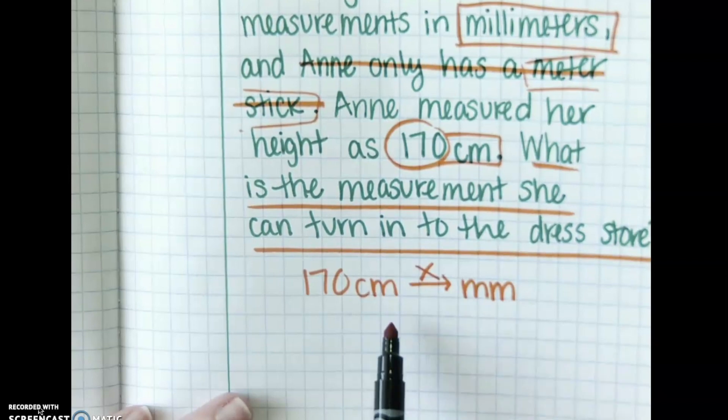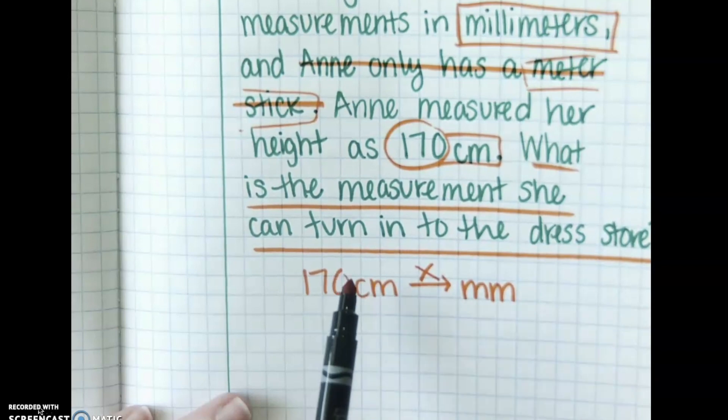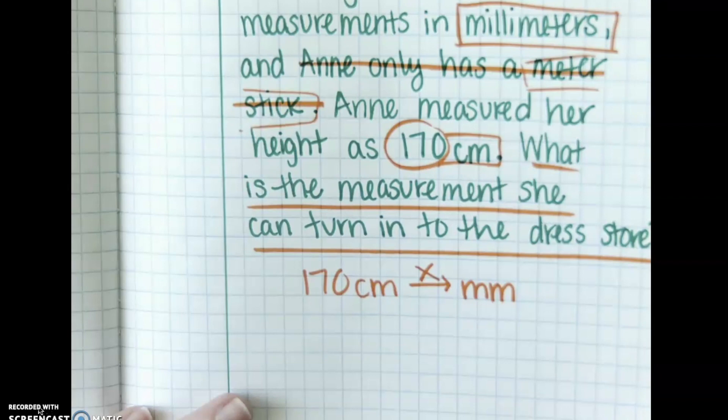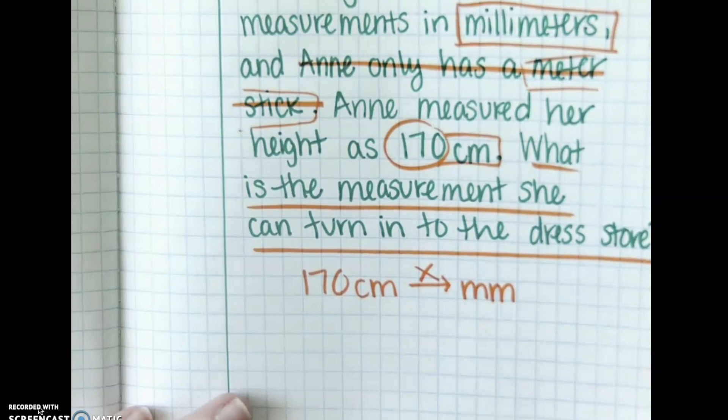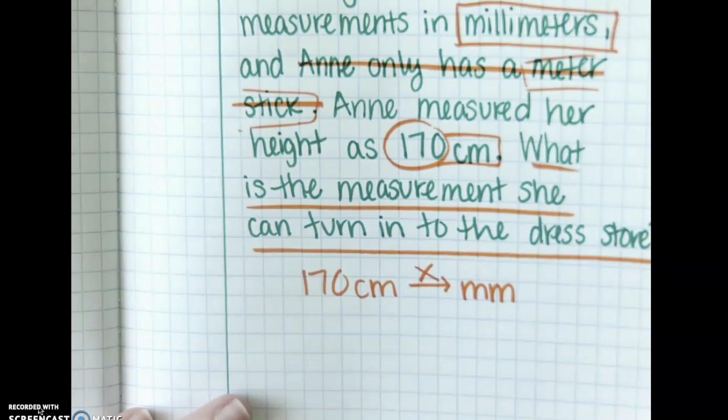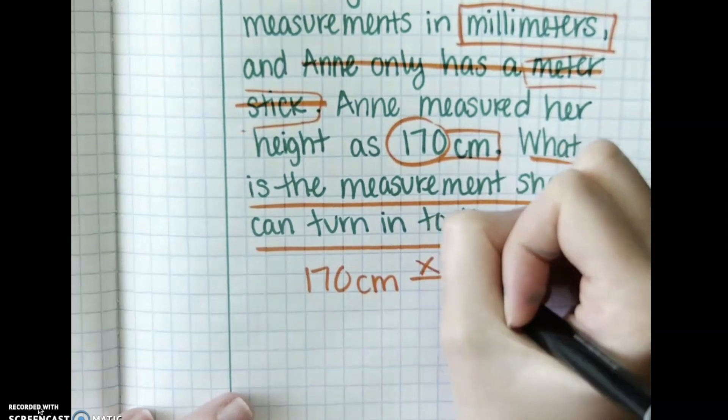All right, centimeters to millimeters. Well I have to think how many millimeters are in one centimeter. To figure that out I could reference my chart. In this case our prefixes might be a little confusing because we're not converting specifically to a meter. We're converting between prefixes. So in this case I would definitely look at the chart. If I look back at my chart it will tell me that there's 10 millimeters in every centimeter. There's 10. And if there's 170 centimeters I have to multiply by 10.